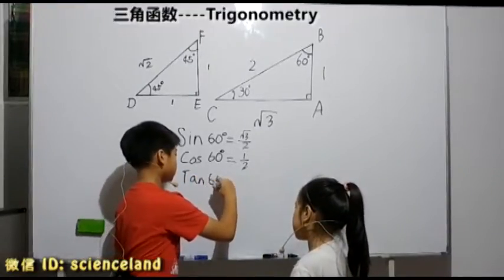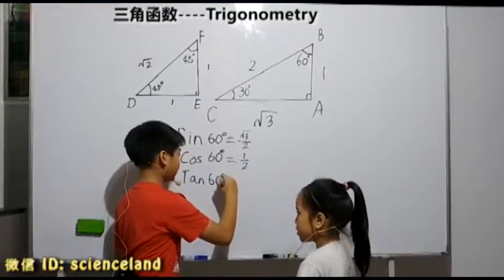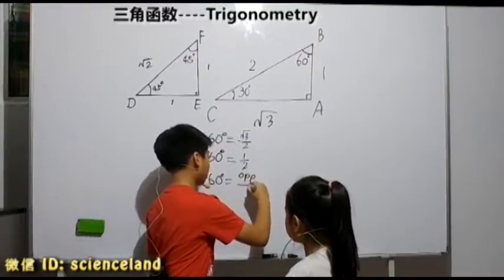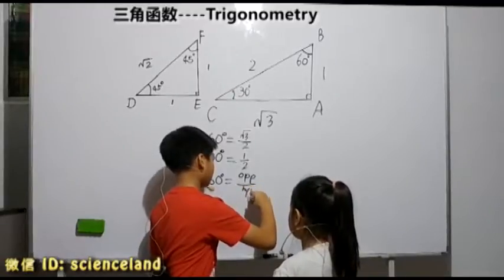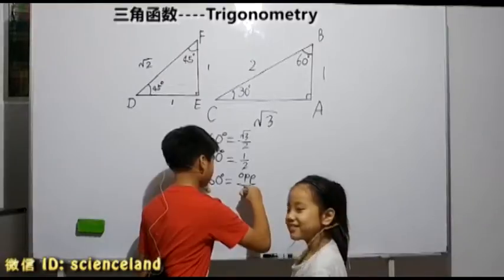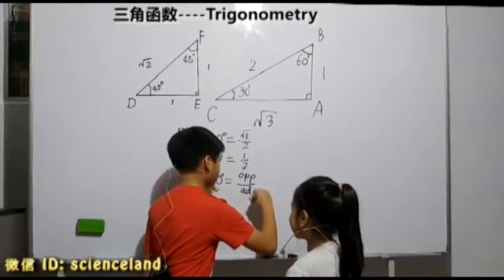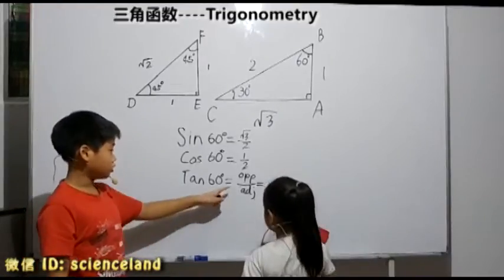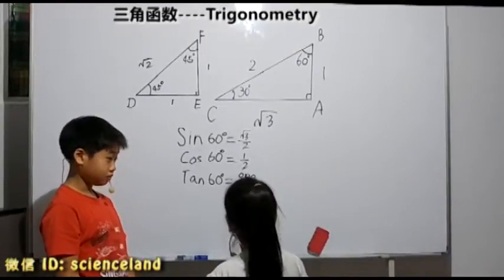Tangent 60 degrees. Tangent is opposite over—it will—adjacent. It's opposite over adjacent, I'm sorry. Okay, so it's opposite over adjacent, right? Right.